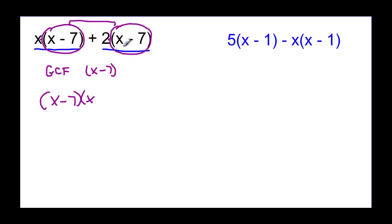So X minus 7 is the common factor, and then I have leftovers, X plus 2. Let's try again. There's two terms here, so I have 5 times X minus 1, and I've got negative X times X minus 1. So in this case, if I just look at this, comparing it to that one, they have X minus 1 in common.